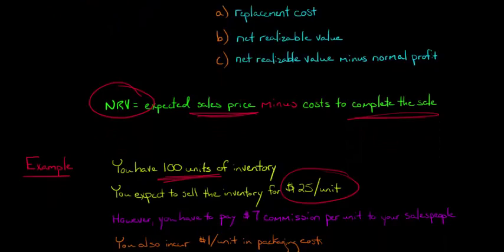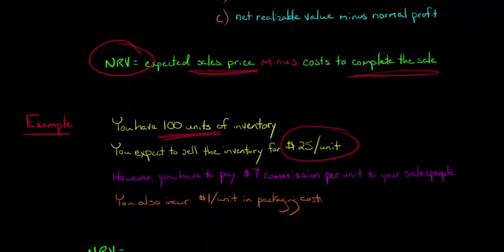So you're going to have to pay $7 commission per unit to your salespeople, assuming that you sell this inventory. So you sell a unit for $25, you're going to incur a commission of $7. Now you're also going to incur $1 per unit in packaging costs.